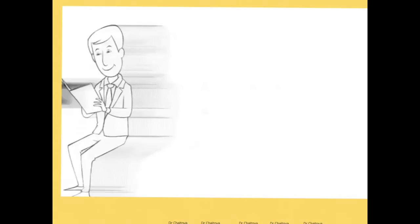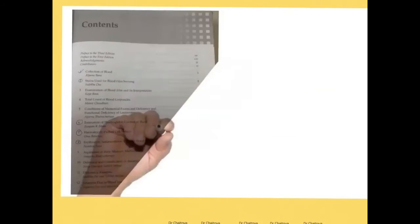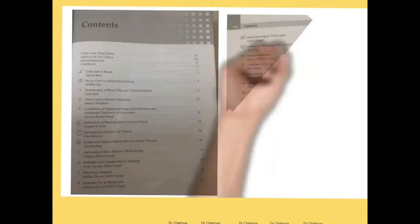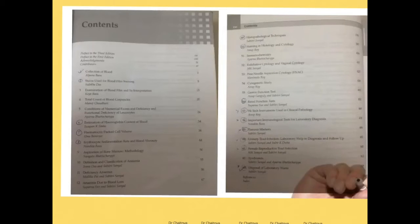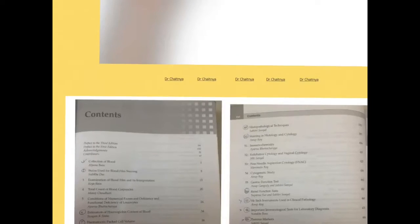Coming to the content of this book, it has been divided into around 62 to 63 chapters, starting from the collection of blood to the histopathological techniques and the disposal of laboratory waste management. Everything has been covered in this book very well and very neatly.